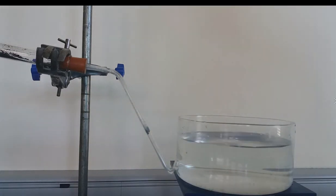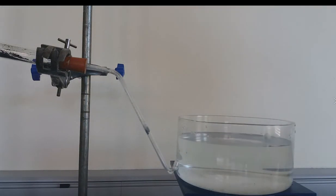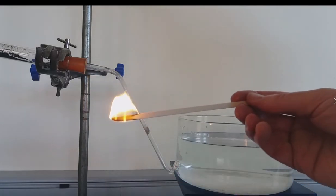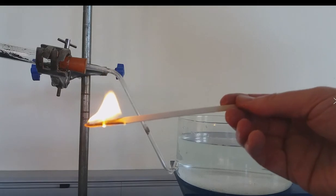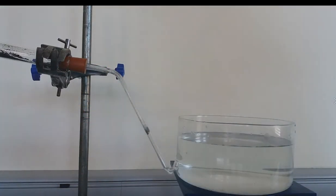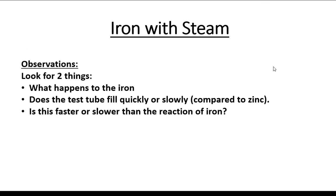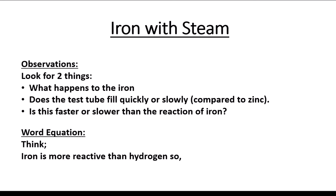We do the pop test just to prove there's hydrogen: we stop with the test tube and check that the hydrogen pops. So the word equation is: iron plus hydrogen oxide gives us iron oxide plus hydrogen — and the gas does pop, confirming hydrogen. Two observations for iron: what happened to the iron, and did the test tube fill quicker or slower compared to zinc? Generally, is that a faster or slower reaction than zinc? Then complete the word equation — iron is more reactive than hydrogen, so iron plus hydrogen oxide gives us… complete that on the worksheet.